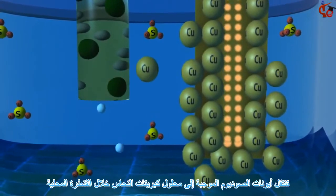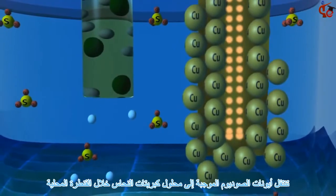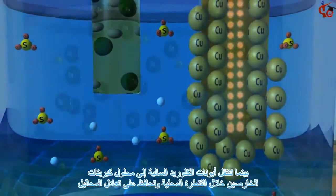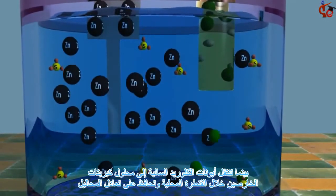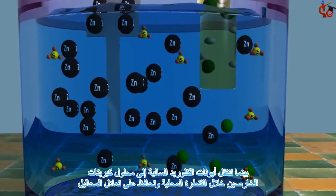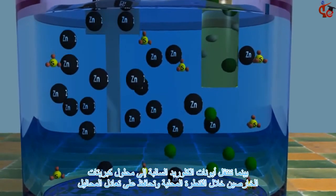Positive sodium ions migrate into the copper sulfate solution from the salt bridge, while negative chloride ions migrate from the salt bridge to the zinc solution and maintain neutrality of the solutions.